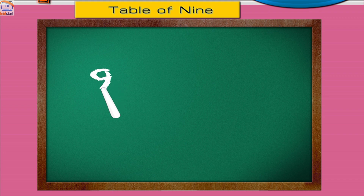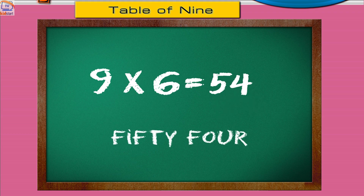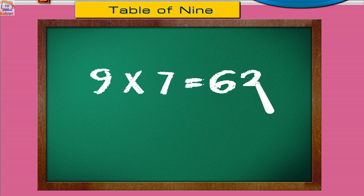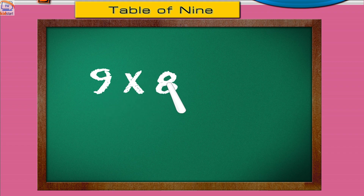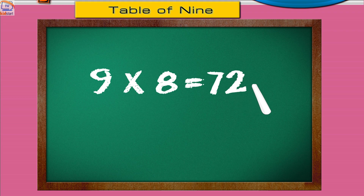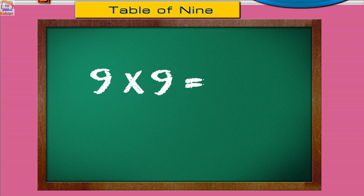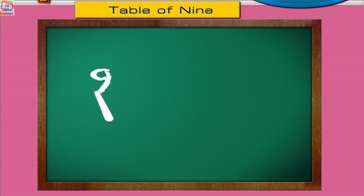Nine sixes are fifty-four. Nine sevens are sixty-three. Nine eights are seventy-two. Nine nines are eighty-one. Nine tens are ninety.